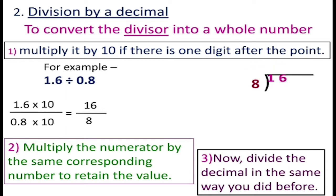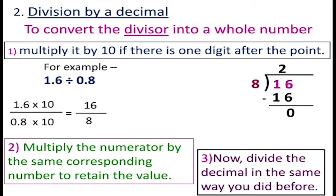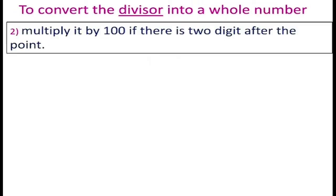Now divide 16 by 8 in the same way as before. We know that 8 times 2 equals 16, so write 2 in the quotient and 16 here, then subtract 16 from 16 to get 0. So the quotient is 2.